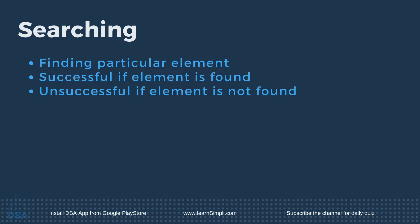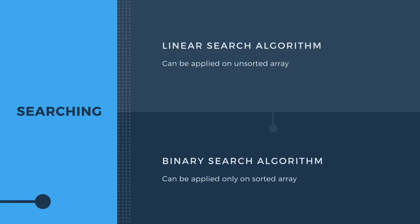Binary search can be implemented on sorted array elements. But in linear search we can perform searching even on an unsorted array. If the given array is not sorted, we have to sort it first and then perform binary search.